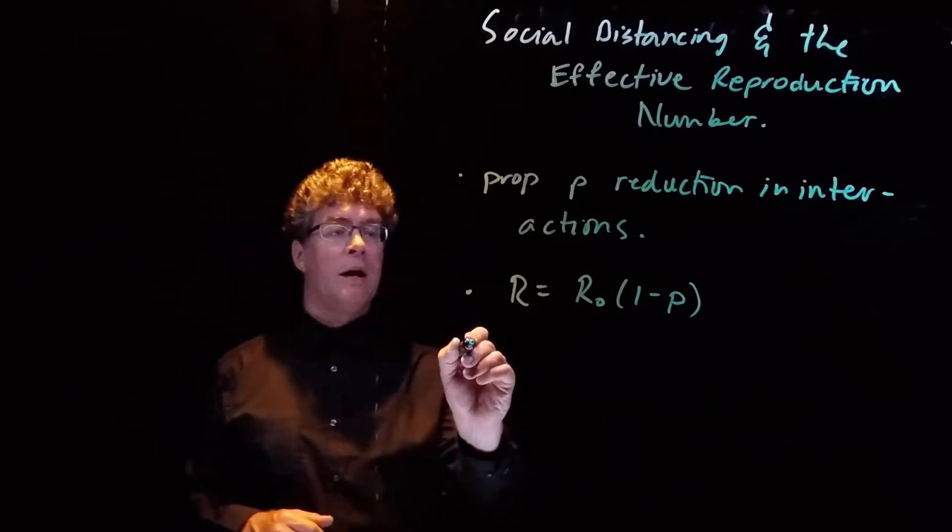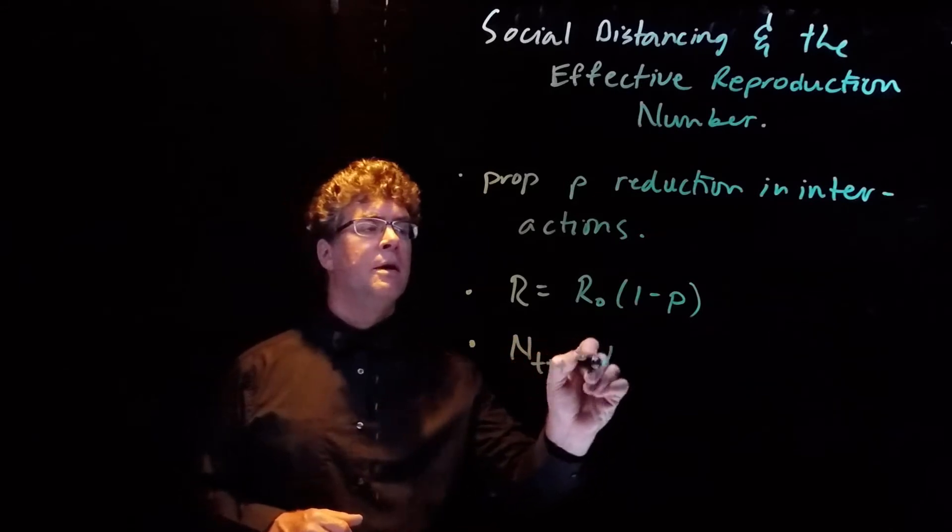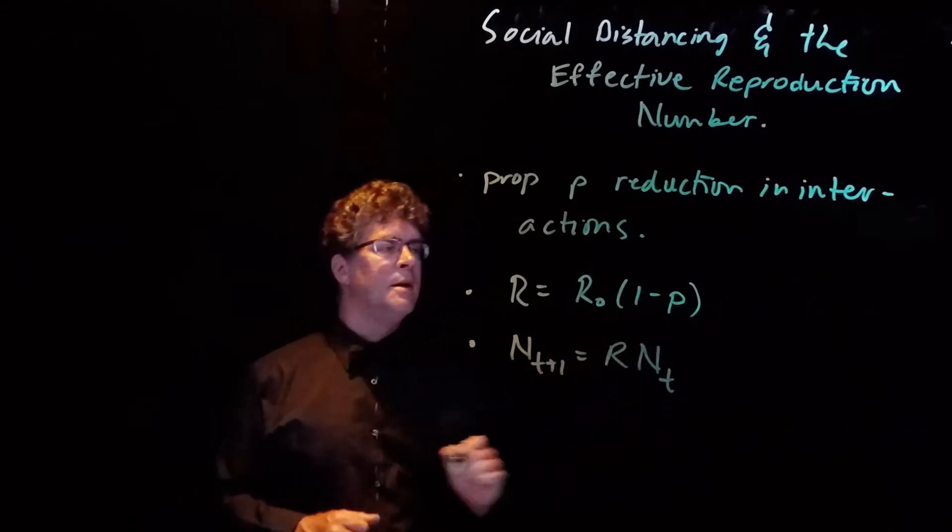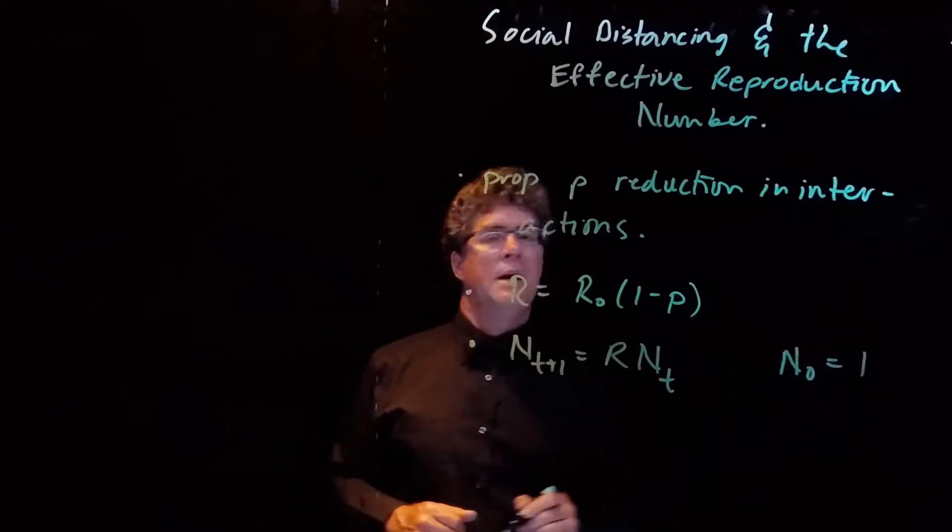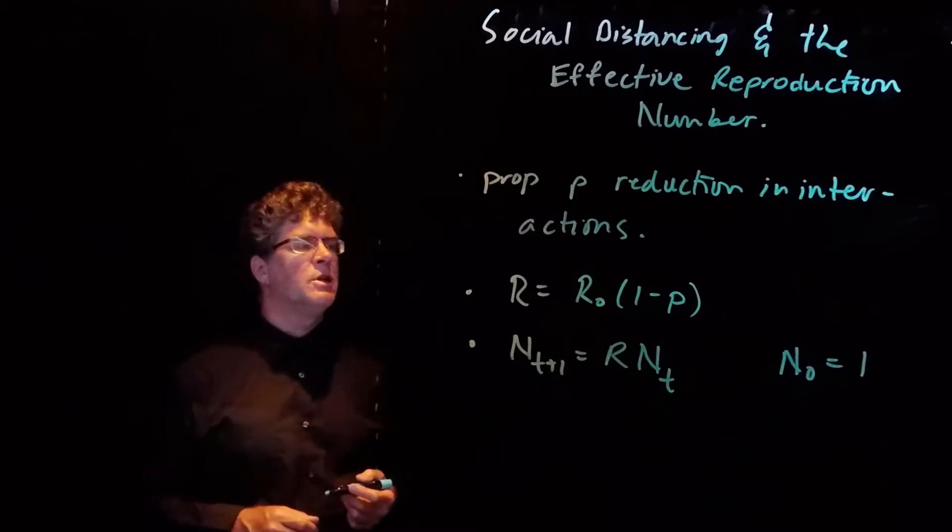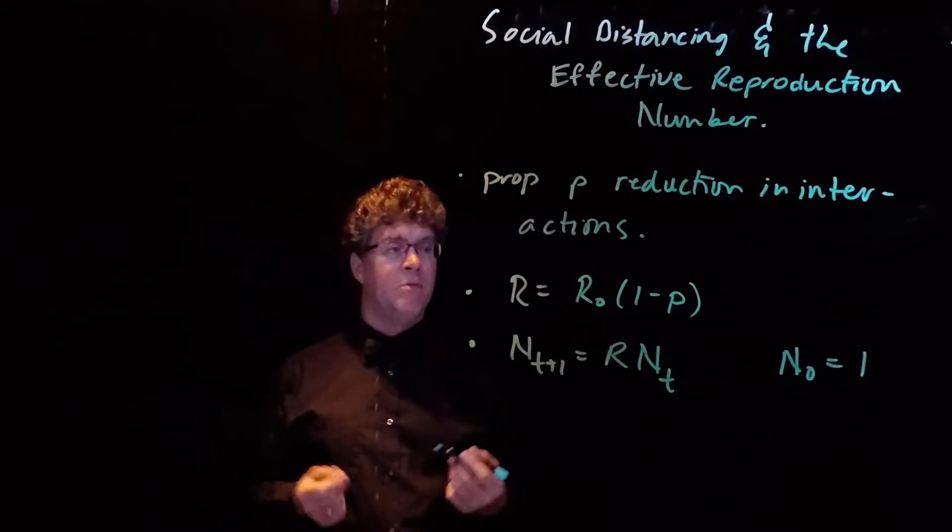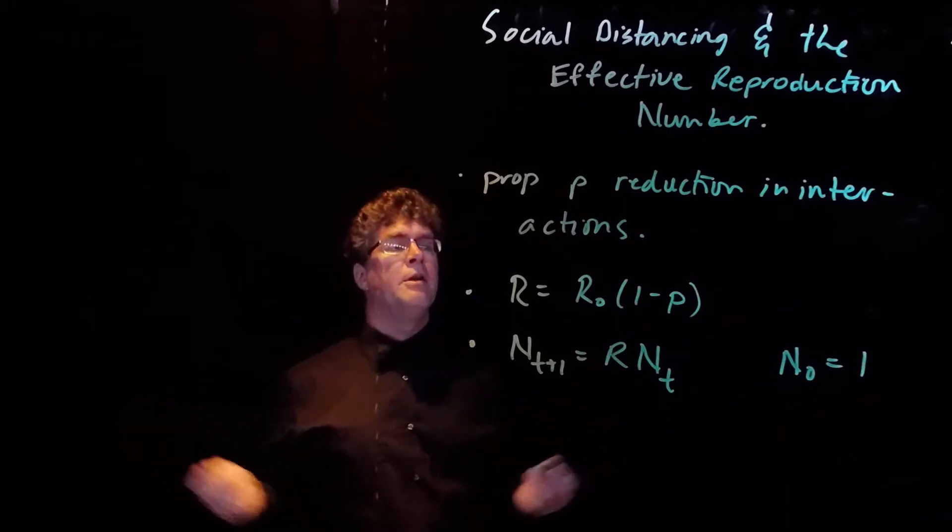Our model now becomes N_{t+1} is R times N_t, where N_0 is equal to 1. So this is very much like the model that we had before, but now the R₀ is replaced by R.